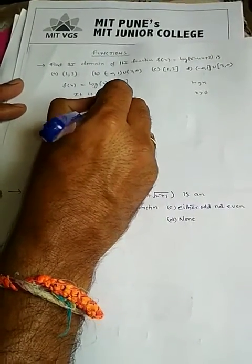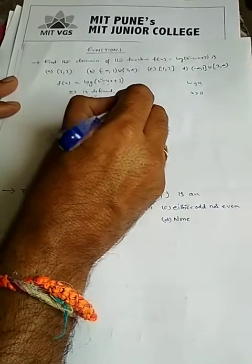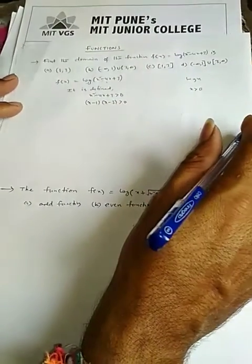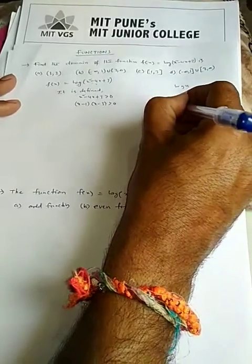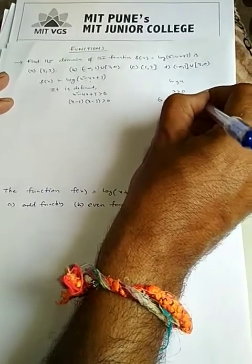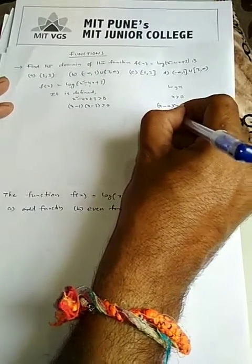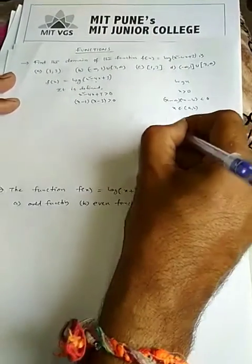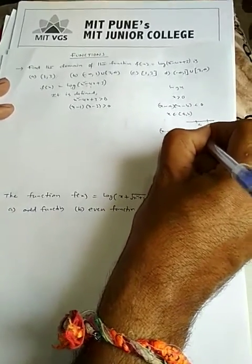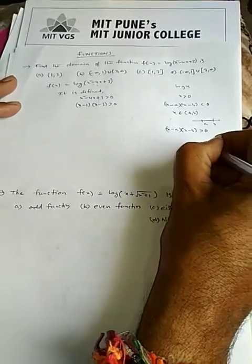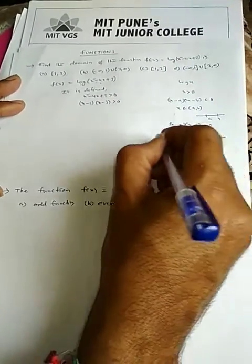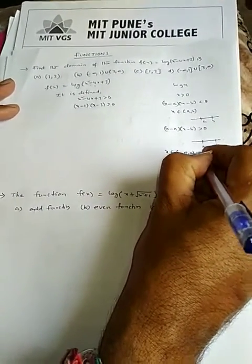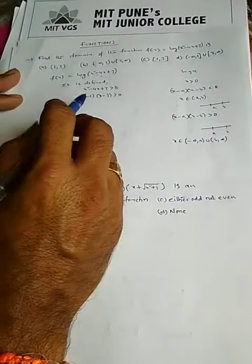Factoring gives (x - 1)(x - 3) > 0. We know that (x - a)(x - b) < 0 means x lies between a and b, and (x - a)(x - b) > 0 means x does not lie between a and b — i.e., x lies in (-∞, a) ∪ (b, ∞).